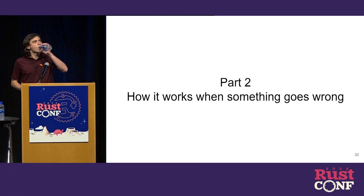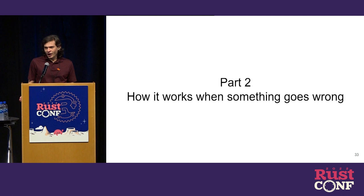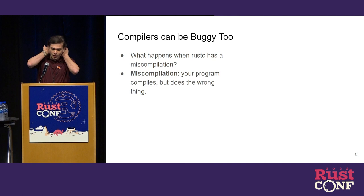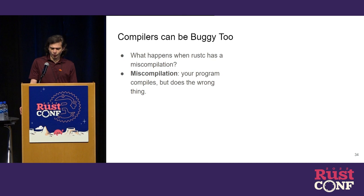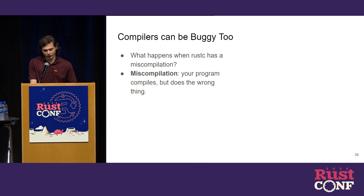I've talked so far about how this works in theory — how we want it to work, how it should work. Now we're going to talk about what happens when it doesn't work. What happens when someone introduces a bug to the compiler? Most of the time it'll be caught by our test suite — we have a lot of tests, they run on every merge, they run on every platform, and we catch a lot of bugs this way. But not everything's covered by tests; sometimes things slip through. Usually things just break your program: it fails to compile, you get an error, you report it, we fix it. But sometimes you get a worse kind of error, and that's when the program still compiles but does the wrong thing at runtime — that's called miscompilation.